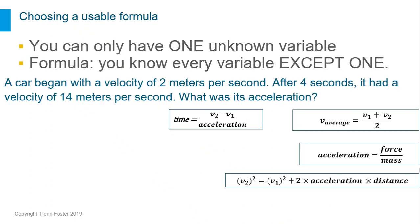Here is an example problem and some formulas to choose from. A car began with a velocity of 2 meters per second. After 4 seconds, it had a velocity of 14 meters per second. What was its acceleration? You know velocity 1, time, and velocity 2. You are looking for acceleration. Which of these formulas can you use? Pause the video to think about it.